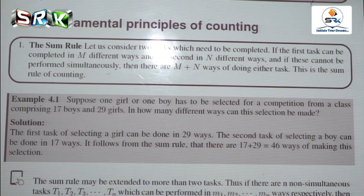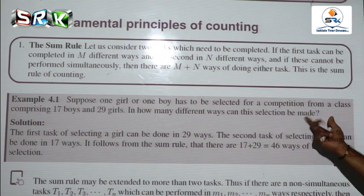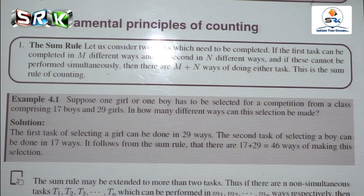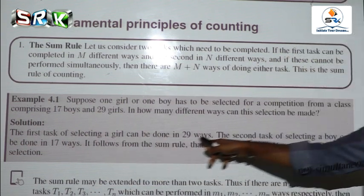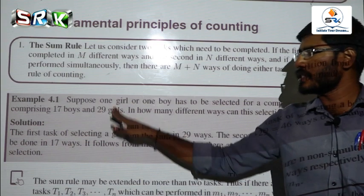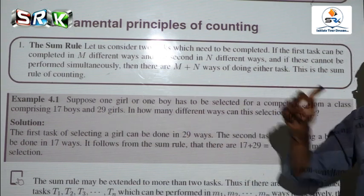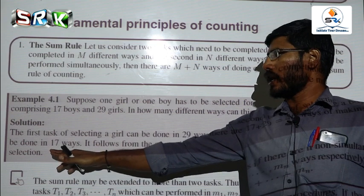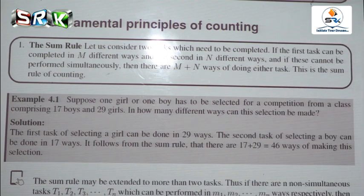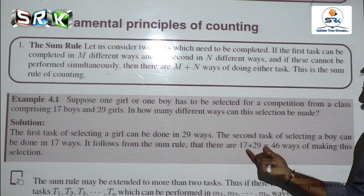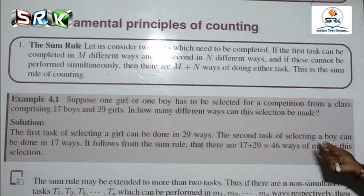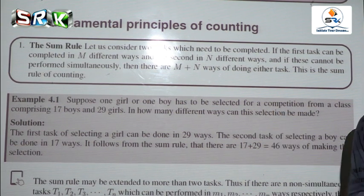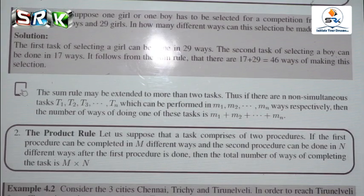Example: either a boy or a girl has to be selected for a competition from a class comprising 17 boys and 29 girls. The first task — selecting a girl — can be done in 29 ways. The second task — selecting a boy — can be done in 17 ways. By the sum rule, 17 + 29 = 46 ways total for the selection.